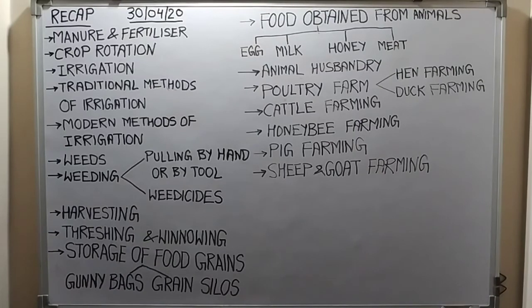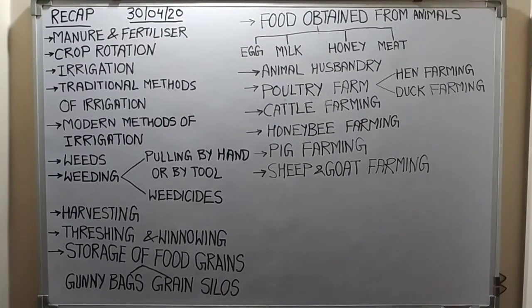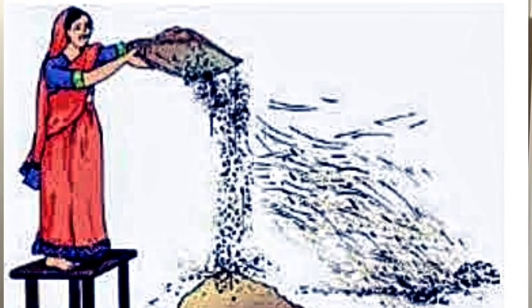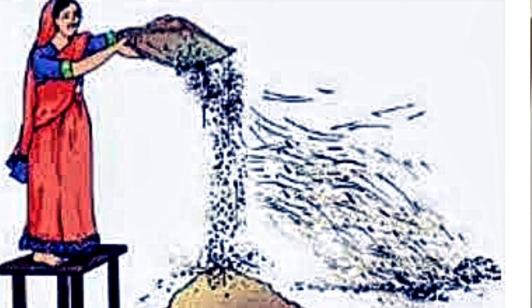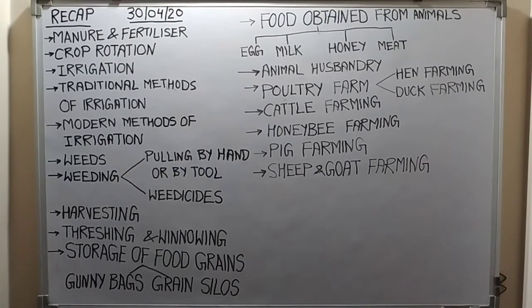After threshing, the winnowing process is done. After threshing, the grains are mixed with the chaff and hay, so we need to separate them. By the process of winnowing, we can separate the main grains from the chaff and hay. As you can see in the picture, a lady pours all the mixture of hay and grains from the top, and with the air, all the chaff and hay are carried to some distance, while the grains, having more weight, are collected at the bottom.